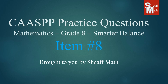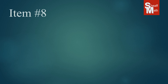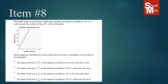CASPI practice test item number eight. In this item, we have a graph that shows a proportional relationship between the distance traveled by Tim on a road trip and the number of hours for which he traveled. So if you spent a certain amount of time driving, you can see how many miles he went. What we're trying to do is find the slope.